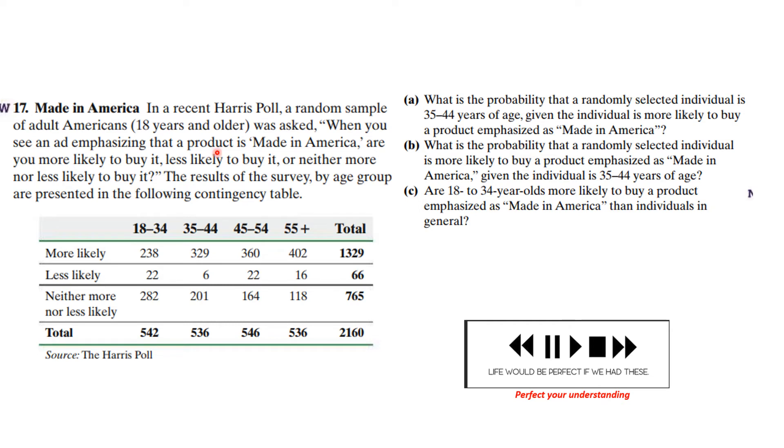Here's another problem. This is a contingency table and so it gives you the number of people that respond to surveys from various age groups and if they're more or less likely or don't really care about buying something made in America. There's a bunch of questions you're supposed to answer.